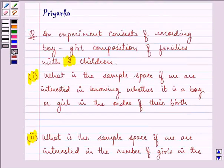So first of all let the boy and the girl be denoted as B and G.